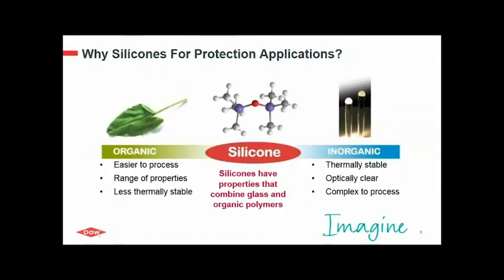So why silicones for protection applications? Silicones are hybrid molecules — they are made up of organic and inorganic chemistry. While organic polymers are easier to process and provide a wide range of properties but are less thermally stable, inorganic materials like glass are more thermally stable and optically clear but more complex to process. So in a way, silicones combine the benefits of both chemistries while compensating for the limitations of each.